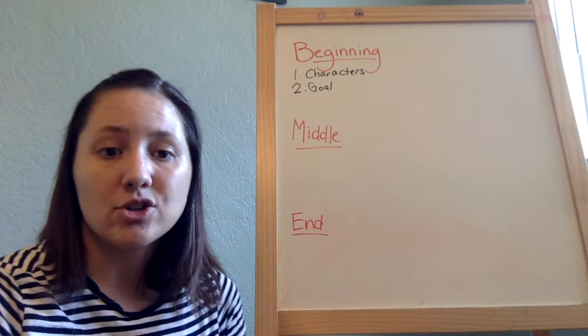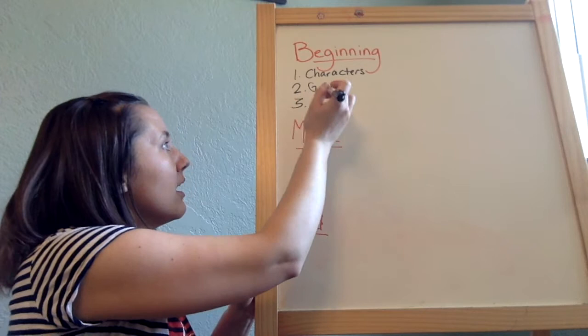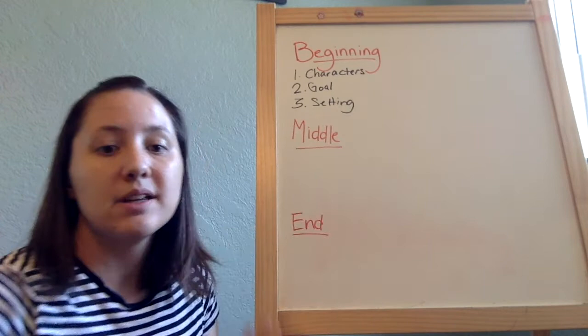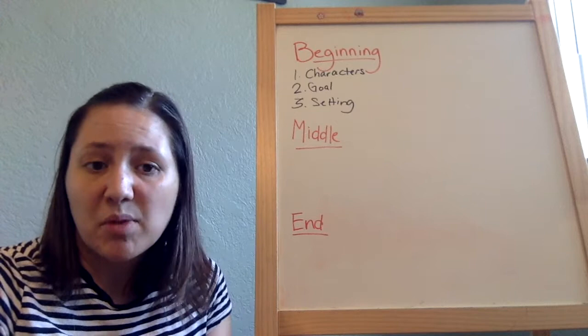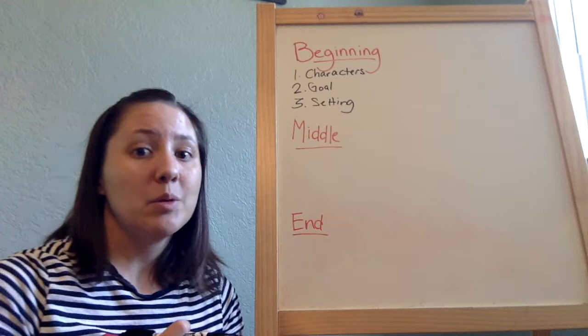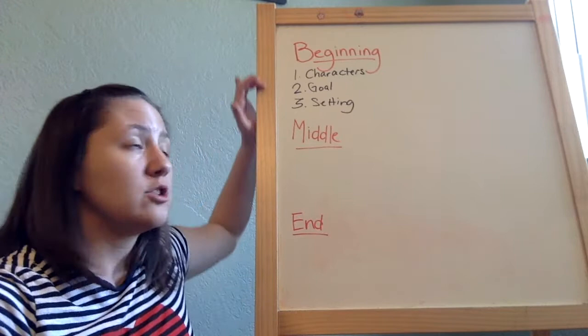The third thing that's really important in a beginning is the setting. We need to know where this story takes place and what it's like, and how it's impacting the main character. If your story takes place on an exploding volcano it's going to be very different than if it takes place at a kitchen table. So in the beginning, introduce these three things: the characters, the goal, and the setting.